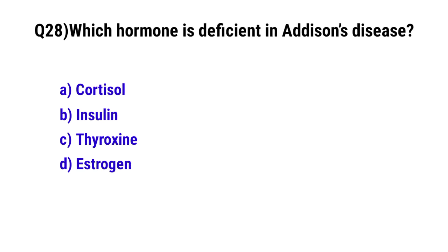Question No. 28: Which hormone is deficient in Addison's disease? The correct option is A: Cortisol.